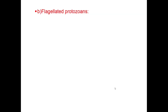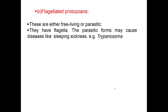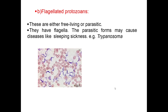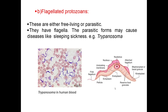Next are flagellated protozoans. These are either free-living or parasitic and have flagella. The parasitic forms cause diseases like sleeping sickness — for example, Trypanosoma. In the first diagram, Trypanosoma is shown in human blood, and in the second diagram, it is the Trypanosoma parasite.